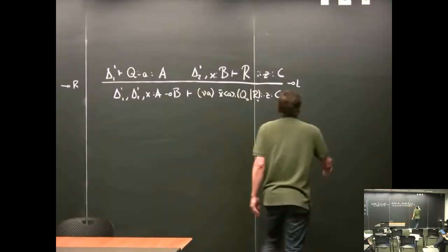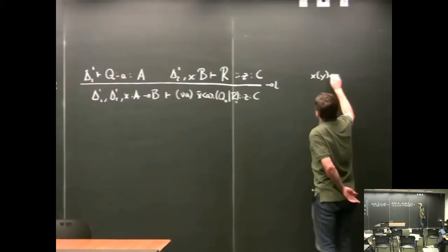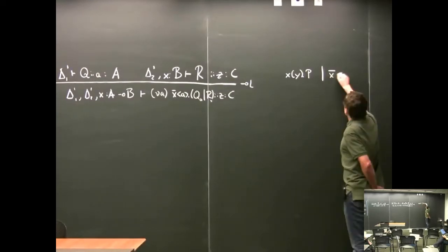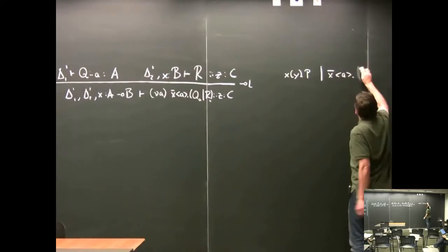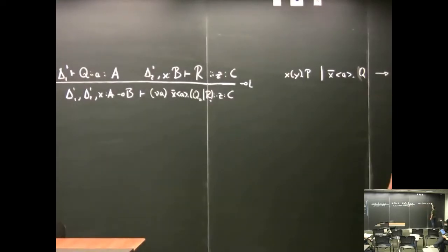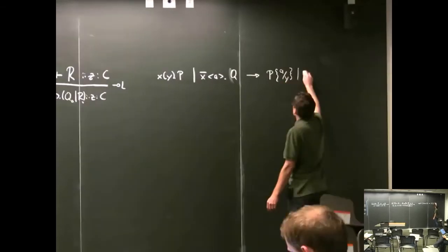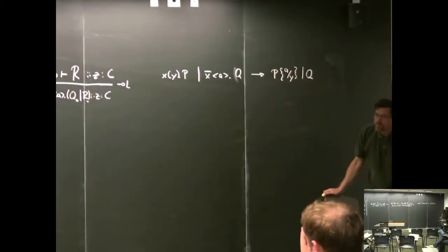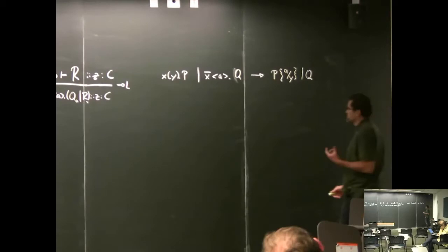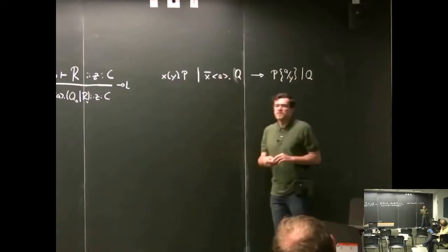And then we have a reduction when we do a cut between the two. The reduction: we have an input of Y followed by P, in parallel with an output of a and then Q — which is the composition of these two things — and that reduces to P where we substitute a for Y, in parallel with Q. This is called synchronous communication because the output and input along the two processes happen at the same time in an atomic way.